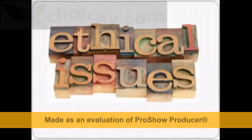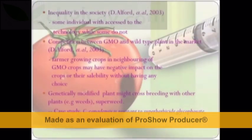There are a series of ethical issues that need to be taken into consideration in terms of plant tissue culture. One important point is the inequality in society where some individuals are not able to access such technology. Other issues involve competition between GMO and wild type, and cross-breeding of variants.